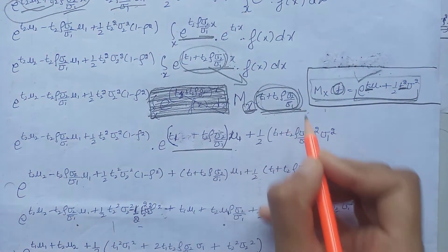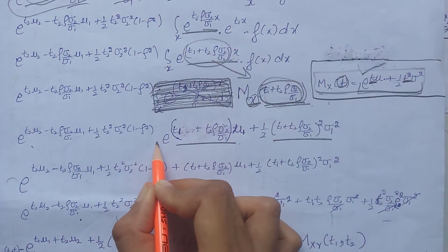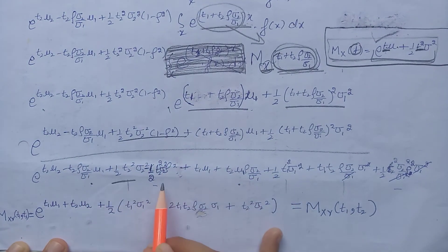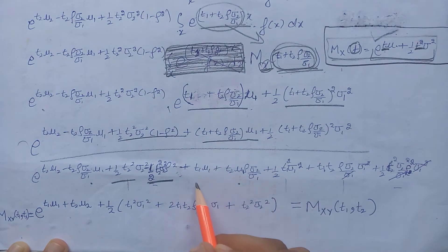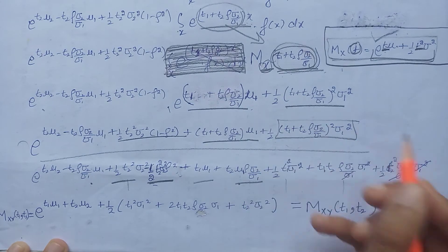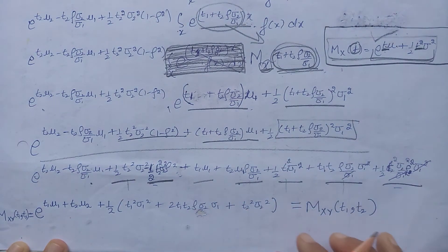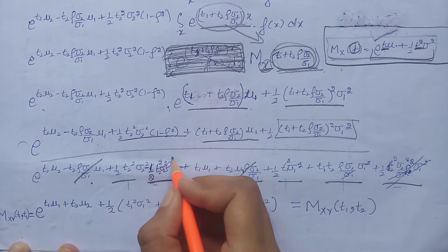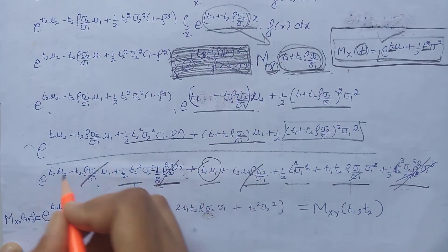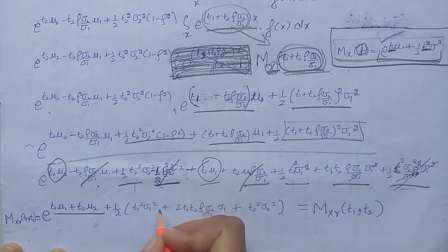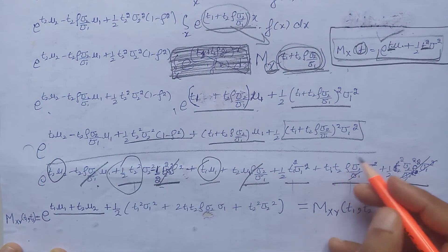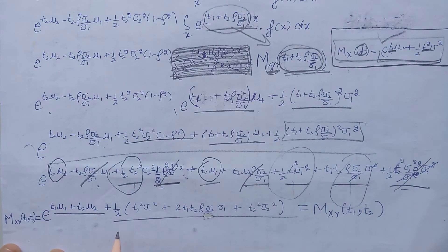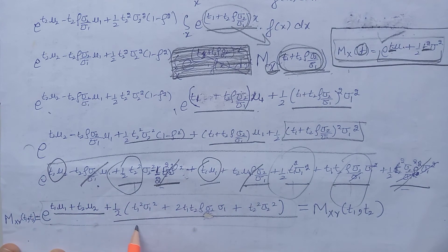In the answer, we substitute the combined t term accordingly. Since the bases are the same, we add all the powers together. Expanding each bracket gives multiple terms. After expanding and solving, we can see that certain terms cancel out with each other. We are then left with the remaining terms. Taking 1/2 as a common factor from three of those terms, we arrive at the final result — the moment generating function of the bivariate normal distribution.